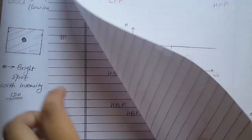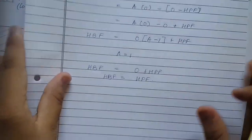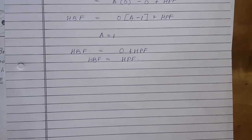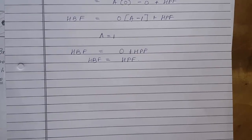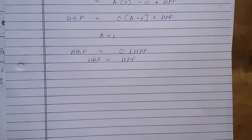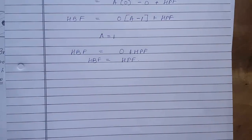So this was all about high boost filters — filters used to pass the main object in the image along with a little bit of the background. In the next tutorial we will be learning about the last of the filters, that is the median filters.